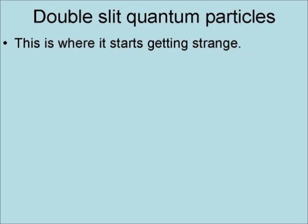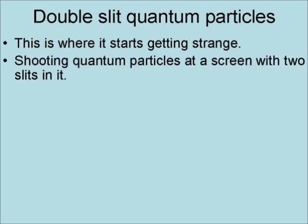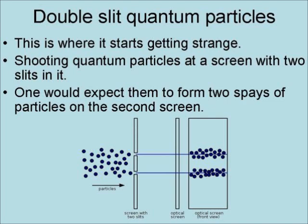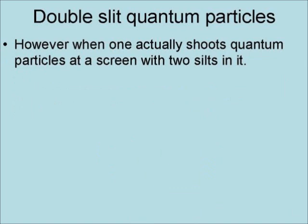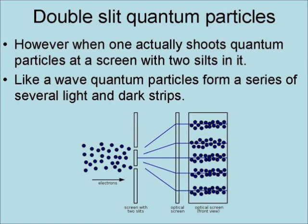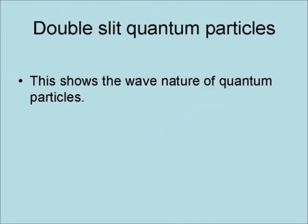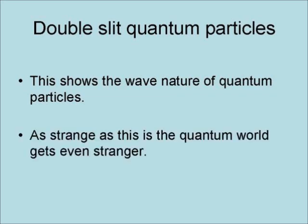Now this is where it starts getting strange. Shooting quantum particles at a screen with two slits, one would expect them to form two sprays of particles on the second screen. However, when one actually shoots quantum particles at a screen with two slits, like a wave, quantum particles form a series of several light and dark stripes. This shows the wave nature of quantum particles.